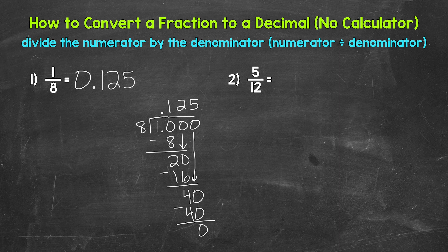You'll notice when I rewrote that decimal, I started with a zero and then the decimal. This is common when writing decimals because it helps us recognize and see the decimal — we don't want the decimal to get overlooked. So something to keep in mind.